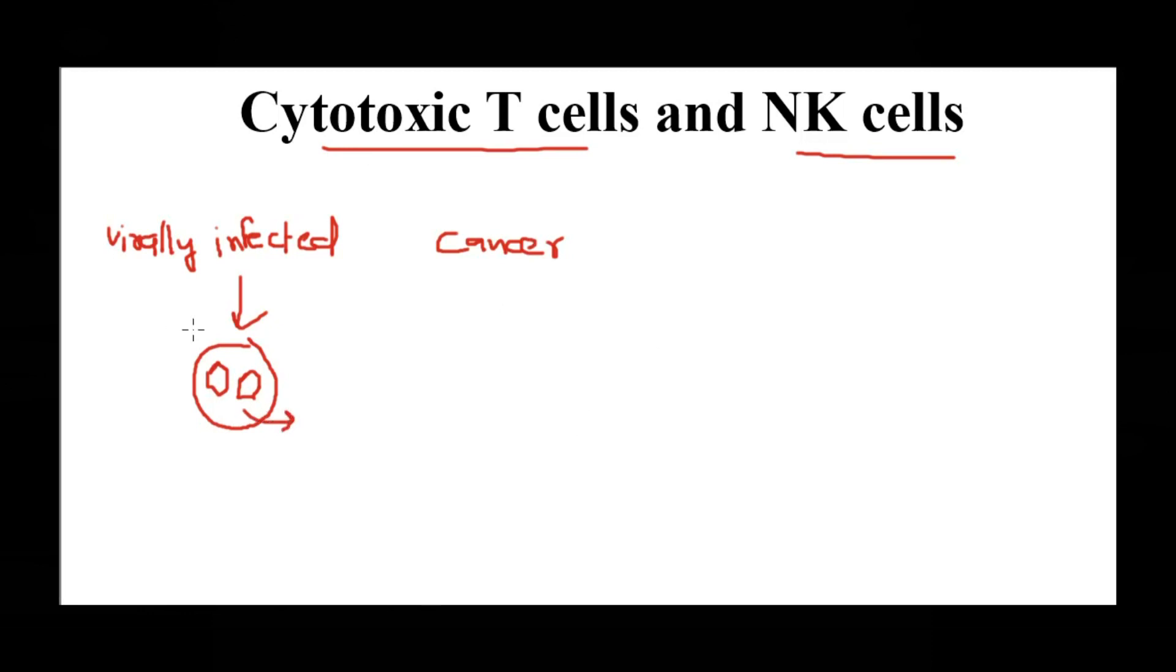Our own cell is going to produce more and more viruses, so this cell needs to be cleared out. Similarly with cancer cells, our own cell which gets transformed to a cancer cell does not know where to stop the growth, so such cells also need to be eliminated from the body.